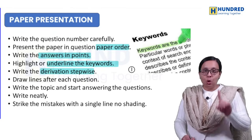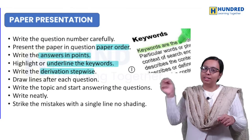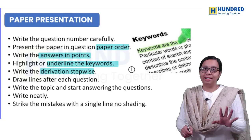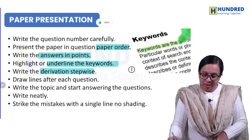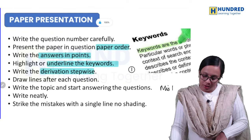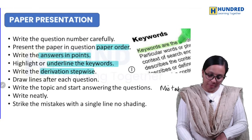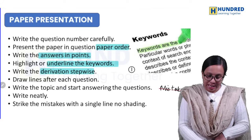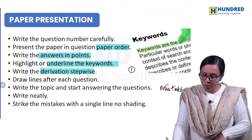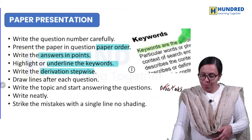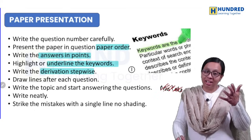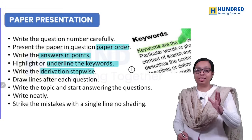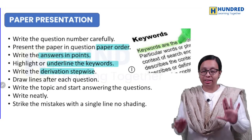If you make a mistake, do not scribble. Just draw a single line through it. If it is a longer mistake, draw two or three lines through it. This is very important — keep corrections neat with a single strikethrough line.